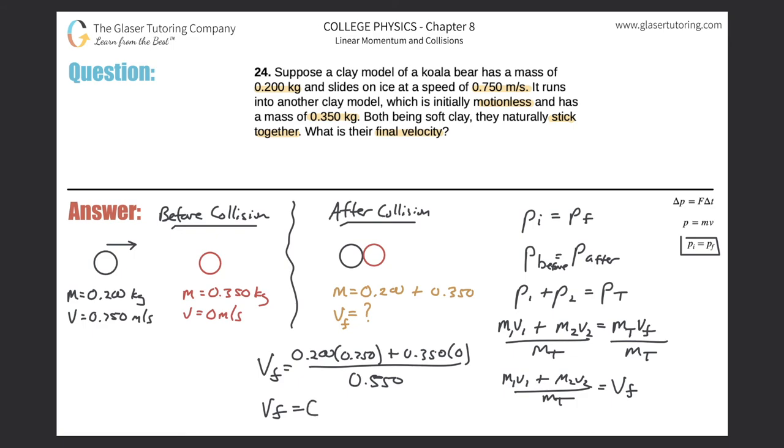And this works out to be positive point two seven three. If I round to three significant figures, this is meters per second. Notice it is positive. And what does that tell us? Well, it tells us the direction. So basically this system after the collision should move to the right. Now it's not moving as fast as the ball initially here as the black ball. And that should make sense, right? Because the black ball hit a red ball that was motionless. So we know it can't go backwards. That wouldn't make any sense, right? If they stuck together. So everything sounds like it makes sense.